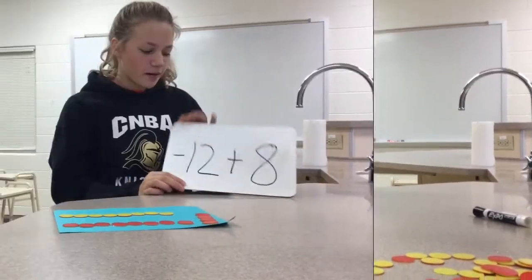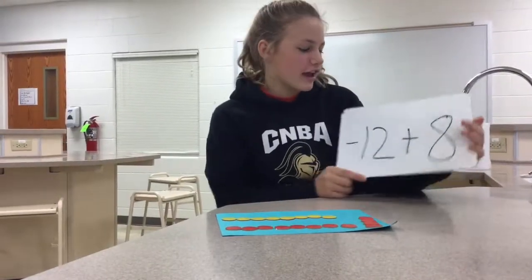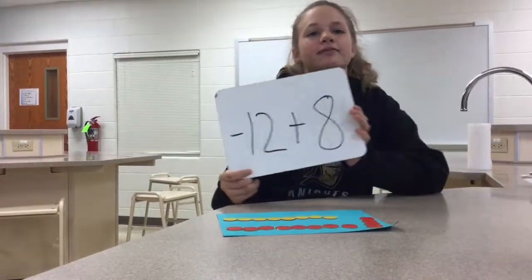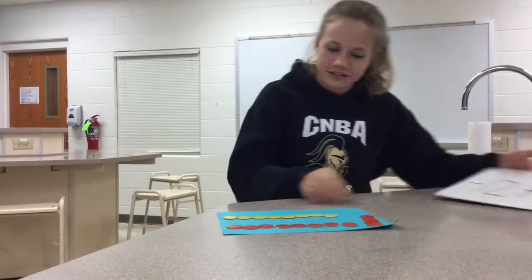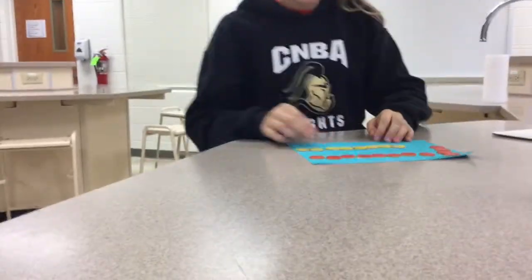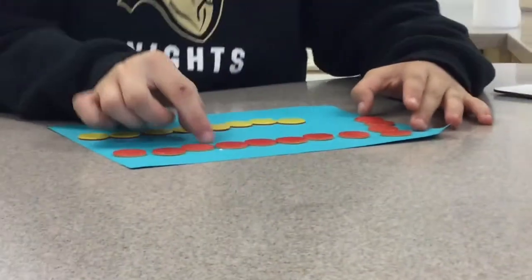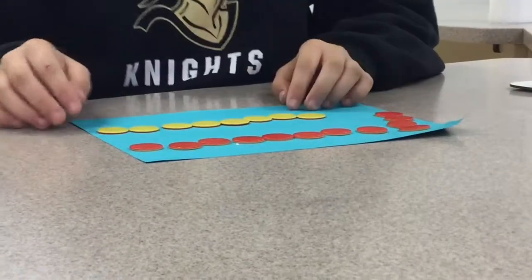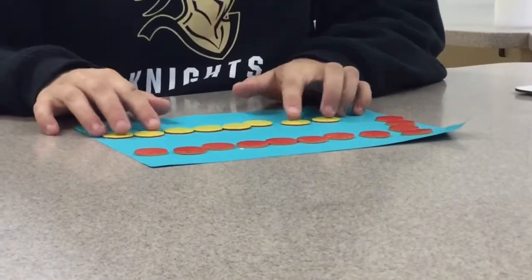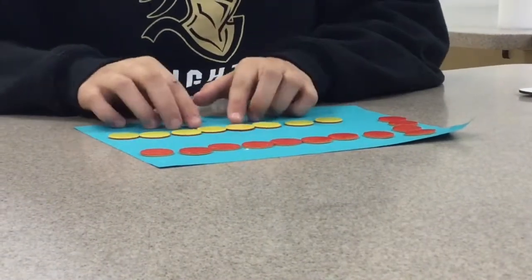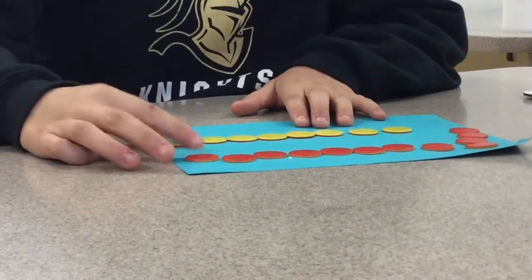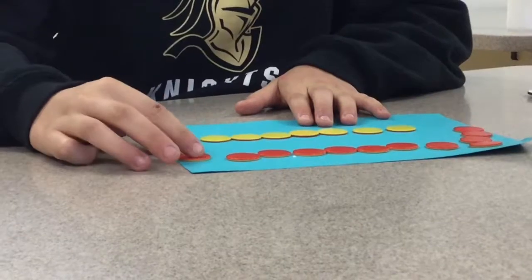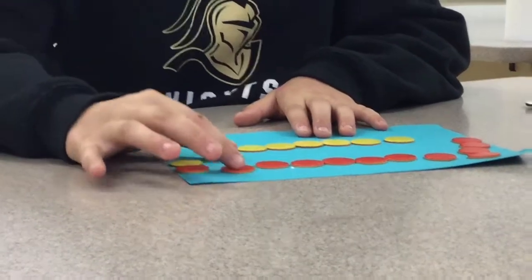Our first problem for addition is negative 12 plus 8. So what we're going to do is we have negative 12 chips, which are 12 red chips, and then we have positive 8 chips. We're going to match them up into pairs of zero.